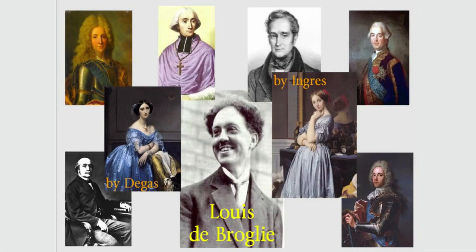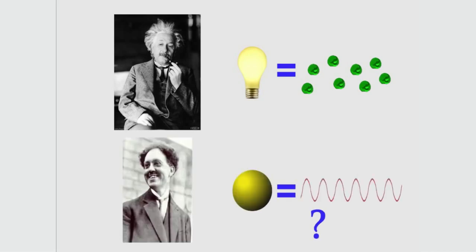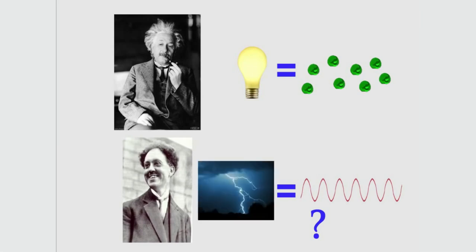He was interested in Einstein's idea that light, which we usually think of as a wave, can act as though it's made of particles. De Broglie wondered, in that case, do things that we usually think of as being particles sometimes act like waves? In other words, could an apparently solid object, like an electron, actually act like a wave?